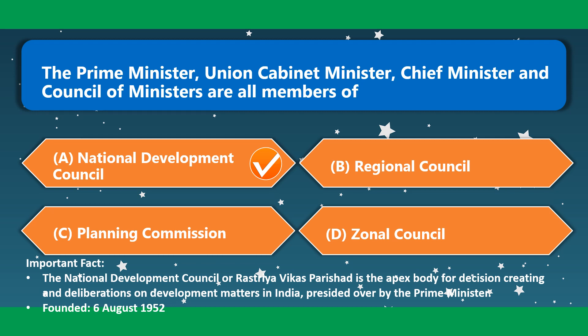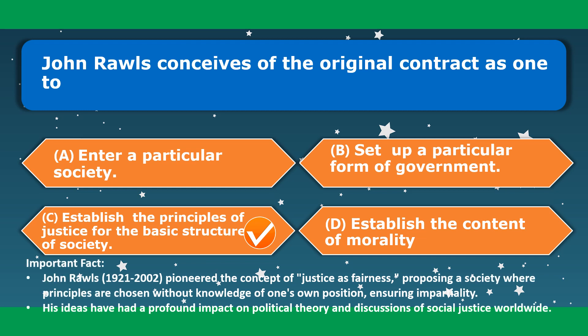The National Development Council, or Rashtriya Vikas Parishad, is the apex body for decision-making and deliberations on development matters in India, presided over by the Prime Minister, founded on 6th August 1952. John Rawls conceives of the original contract as one to establish the principles of justice for the basic structure of society. Rawls pioneered the concept of justice as fairness, proposing a society where principles are chosen without knowledge of one's own position, ensuring impartiality.